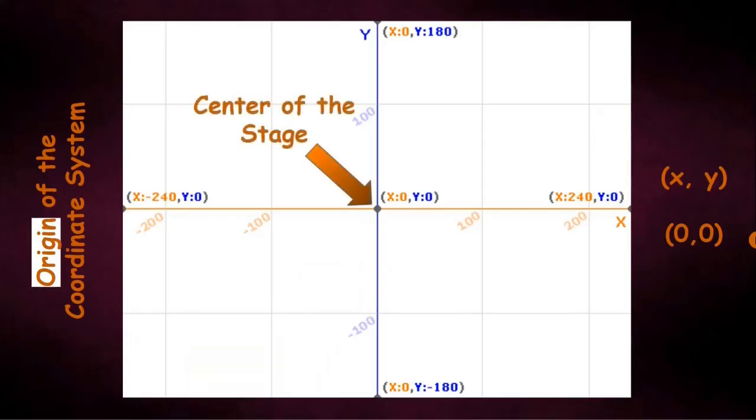We know what is the center of the stage but what is called the origin of the coordinate system. By convention, the coordinates are written as a pair of x comma y. You can see here. For example, the values will be 200 comma 100 or 80 comma minus 50. Likewise, if we use 0 for both x and y, the point will be like this 0 comma 0. This point is called origin of the coordinate system. Here it is.